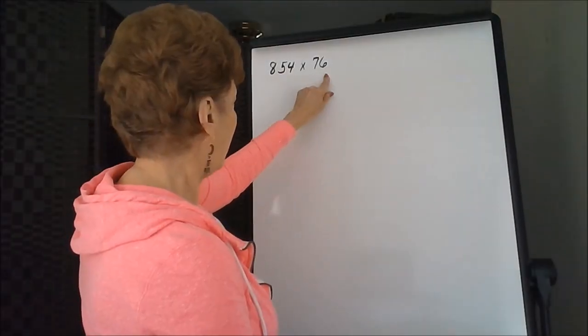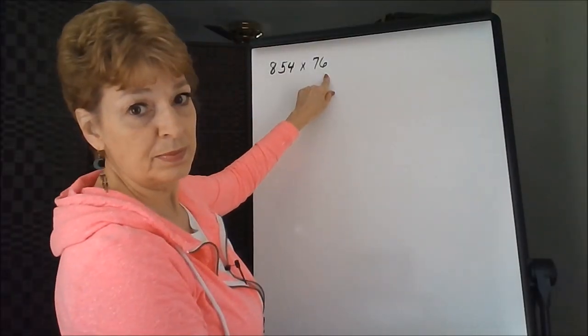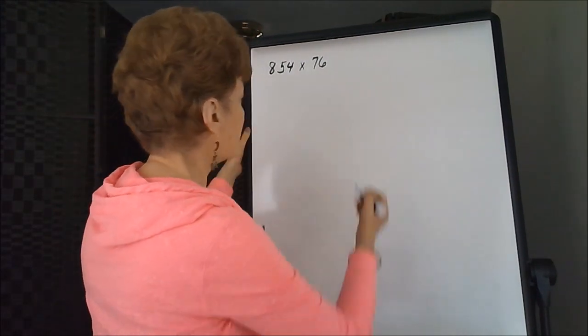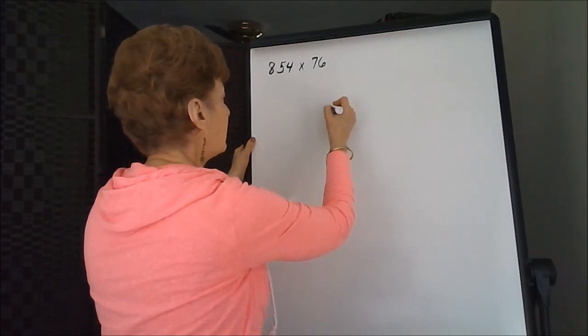This time we have a three-digit multiplication number times a two-digit. So the box is going to have to be a little larger.